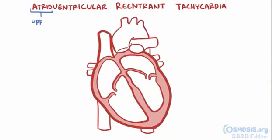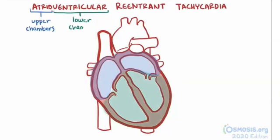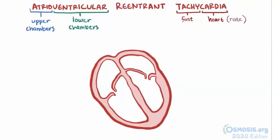The atria are the heart's upper chambers, and the ventricles are the lower chambers. Re-entrant tachycardias are fast heart rates caused by electrical signals that loop back on themselves.